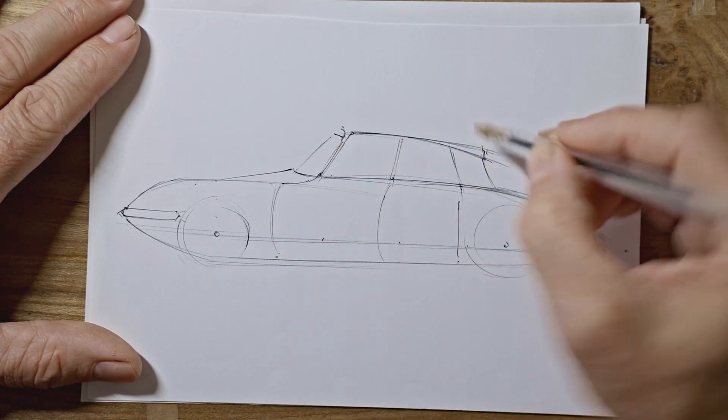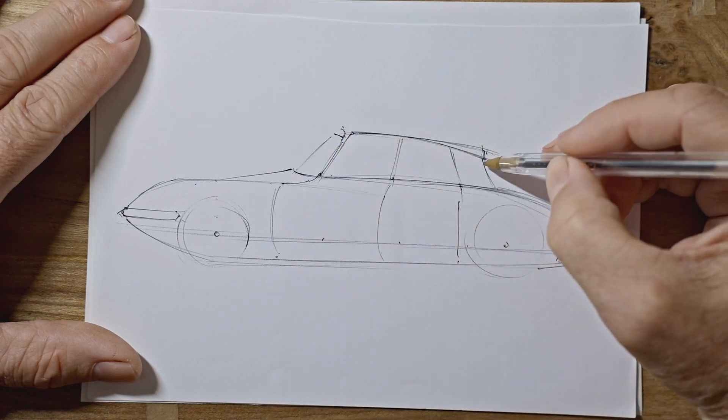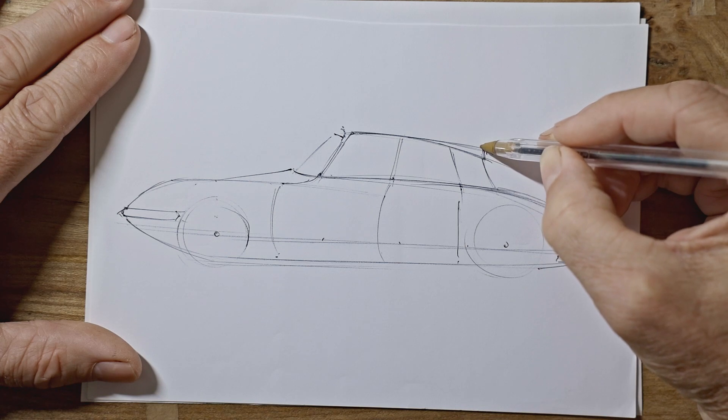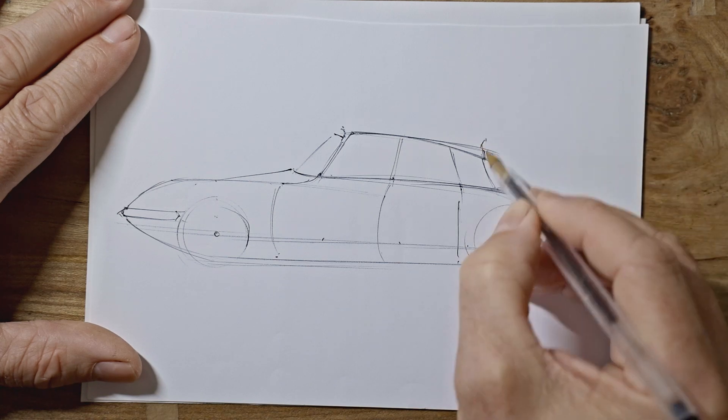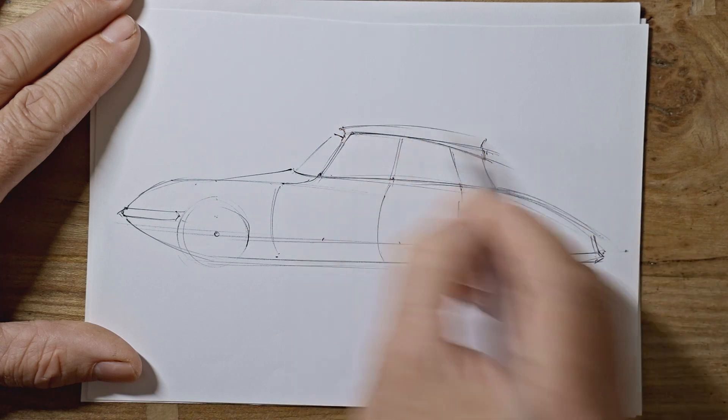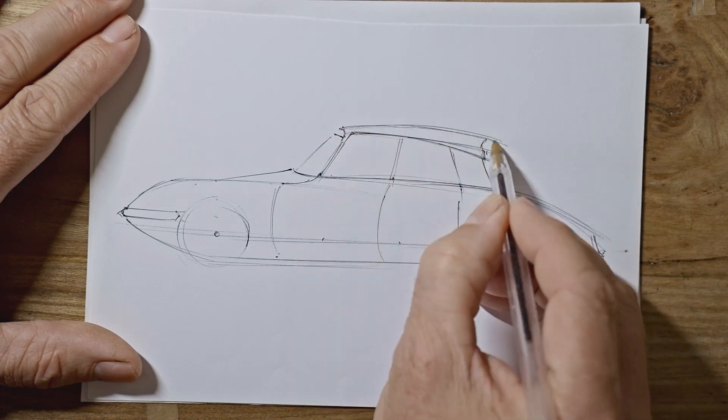And now for the roof, we need to add some thickness to this roof. This line here, if you imagine that continuing a little bit, that will be the top edge of your rear screen. And your roof needs to just curve nicely to meet it.